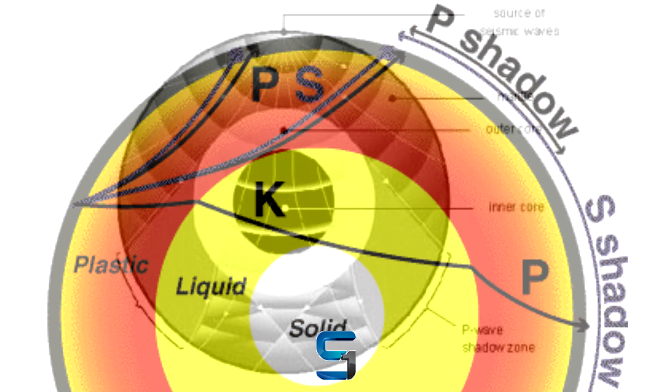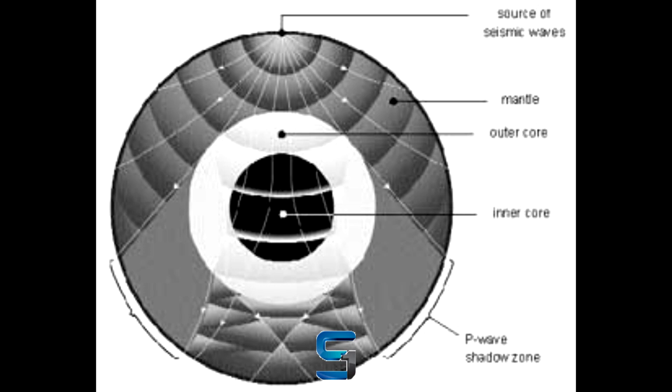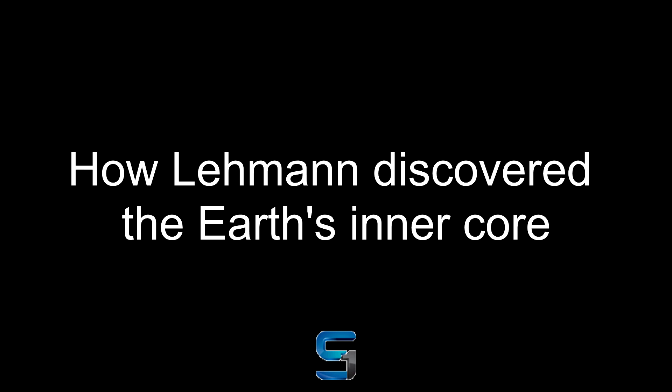P waves are slightly bent when they move through liquids, so the molten core was effectively focusing them like a lens, causing more waves to appear past 140 degrees, but none to appear between 104 and 140 degrees.